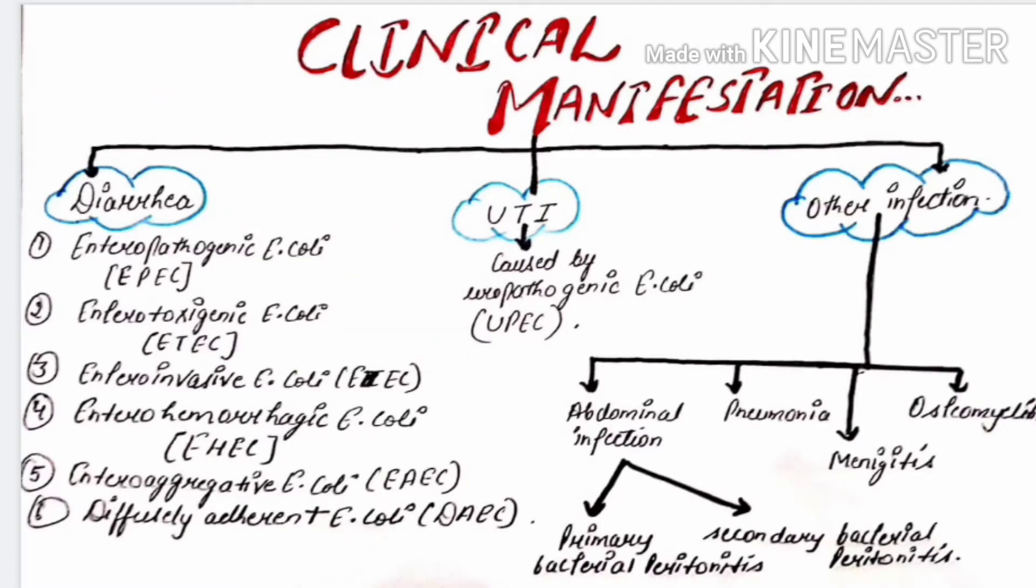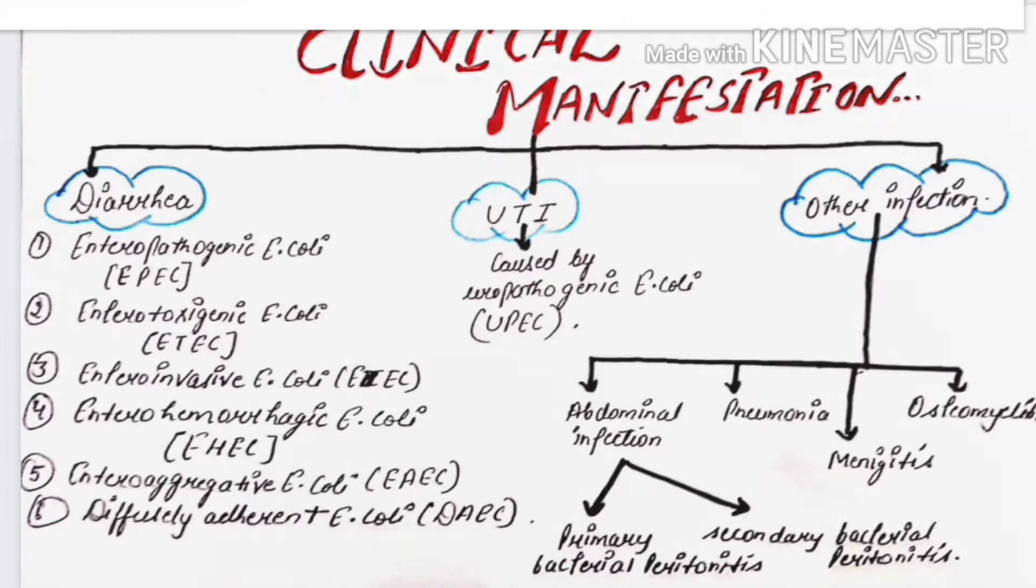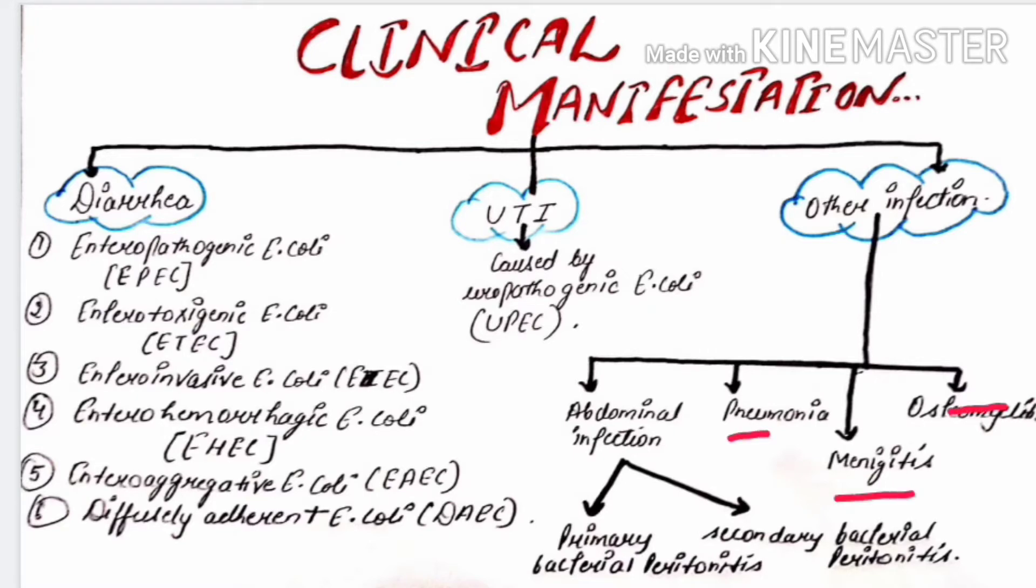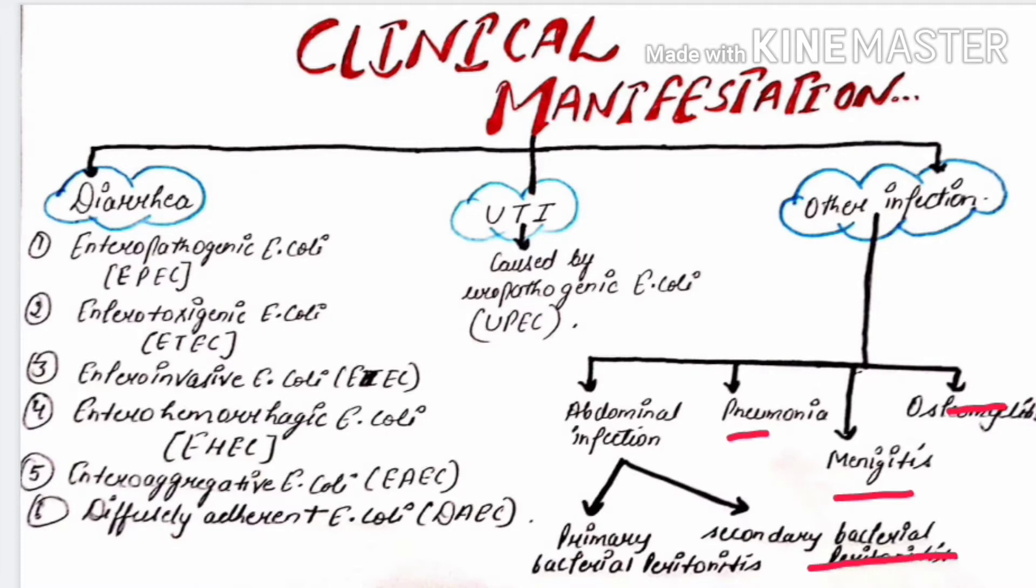Here are some clinical manifestations of E.coli. E.coli is the causative agent of diarrhea, UTI, and some other infections that include abdominal infection, pneumonia, osteomyelitis, and meningitis. It is the most common cause of abdominal infection. It can cause both primary bacterial peritonitis and secondary bacterial peritonitis.